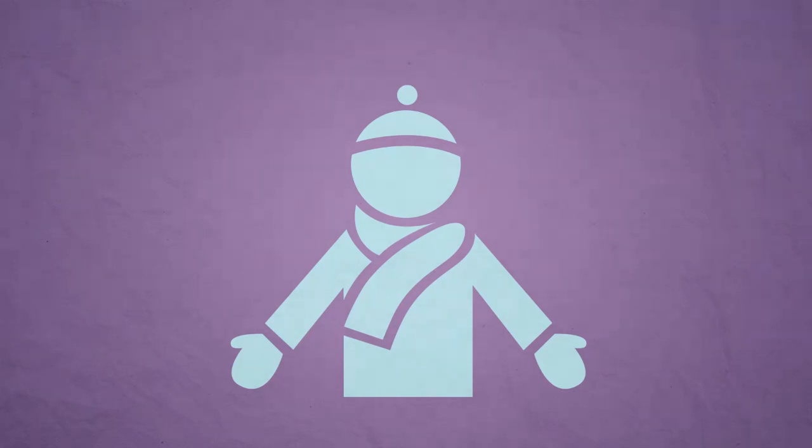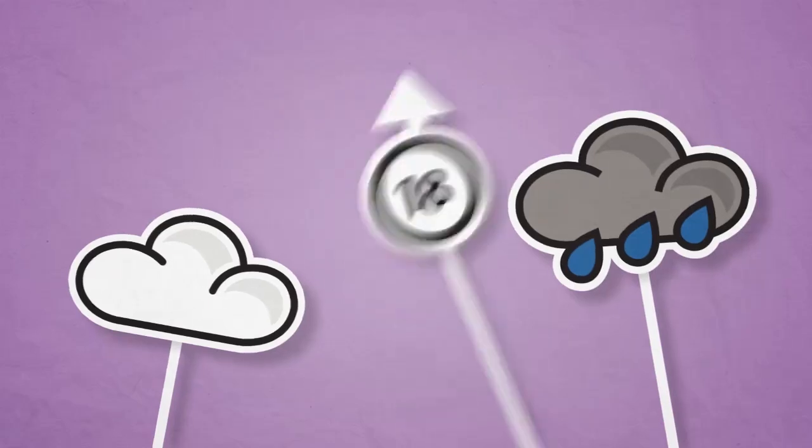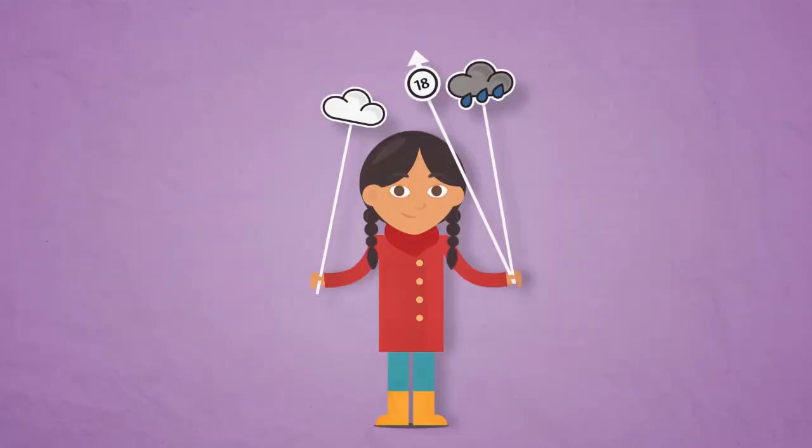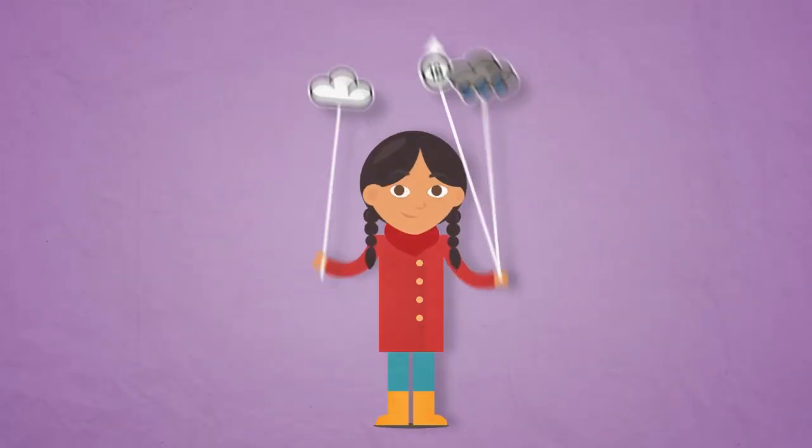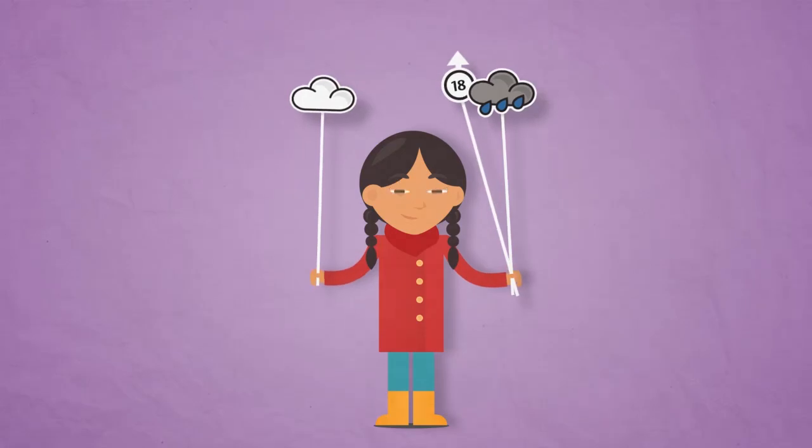If there is low pressure, then it's normally cloudy, wet and windy. So it's a good time to put on a raincoat and wear your wellies.